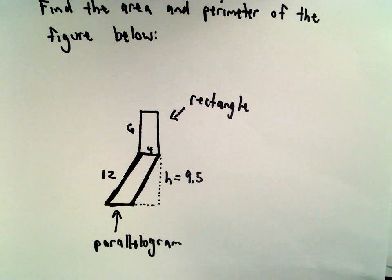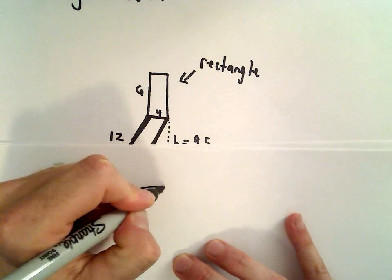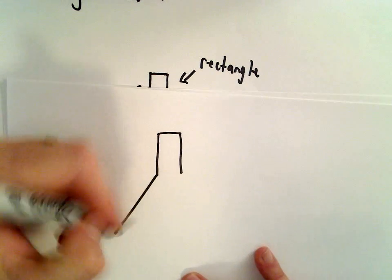So let's do the perimeter first. I think that's probably a little more straightforward. Either one is not too bad. It's just a matter of knowing formulas. Okay, so for my rectangle, let me just redraw this figure real quick.